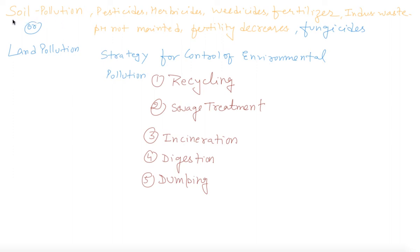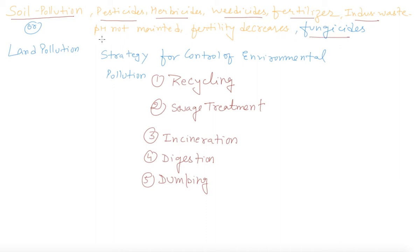My idea is to discuss soil pollution or land pollution. Soil pollution or land pollution is mainly caused by pesticides, herbicides, rodenticide, fertilizers, industrial waste, and fungicides. The effect of all these is that the pH of the soil is not maintained and fertility decreases.